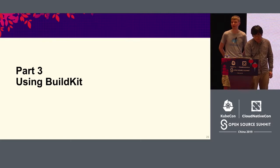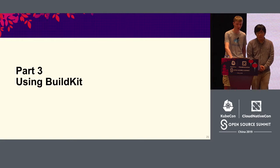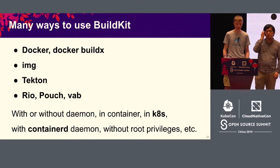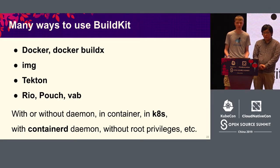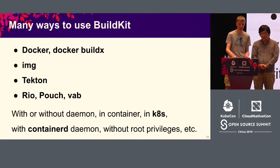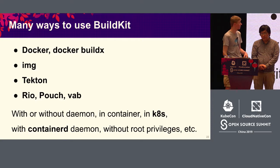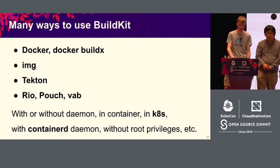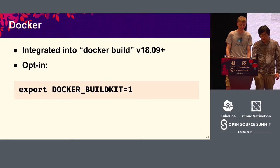So those were a couple of examples of new features in BuildKit. Let's look at how you can actually use it. There are many different ways to start using BuildKit. The simplest one is through Docker — it's integrated into Docker build. We also have a new product called Docker BuildX that I'll show a little bit later. Other tools include IMG, which is basically a version of BuildKit for cases where you don't want to have a daemon. There are also different projects that integrate with BuildKit — Tekton, Rio, Pouch. You can use it in any combination inside containers, in Kubernetes, with a ContainerD daemon, without it, in rootless mode, and so on.